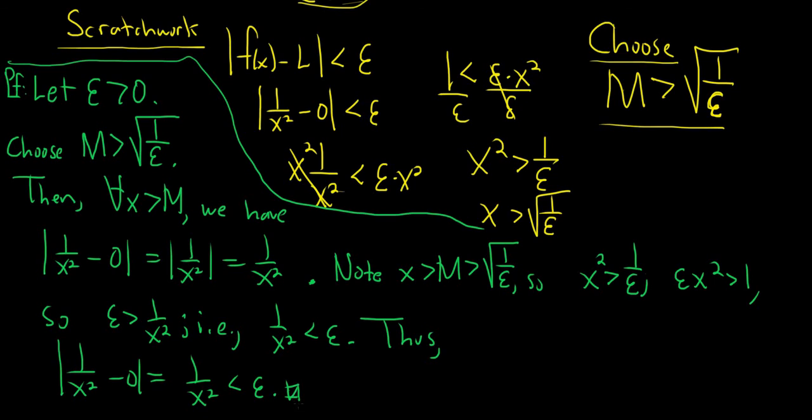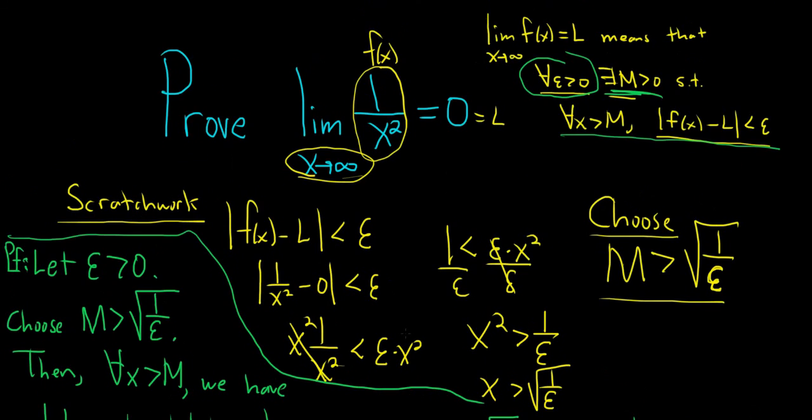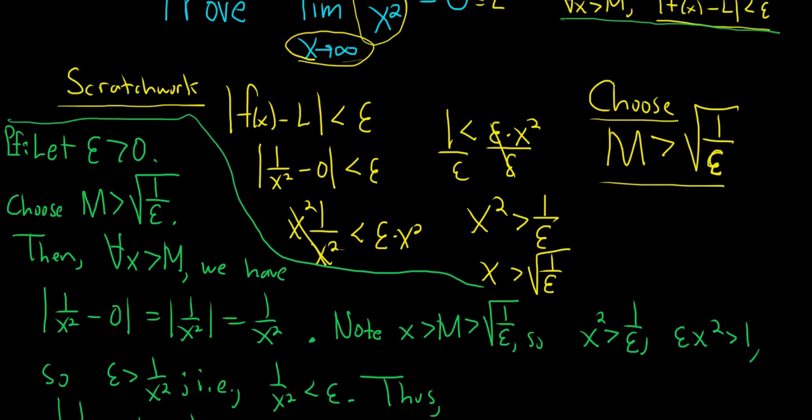We have satisfied the definition. Notice how I wrote it again here at the end and said thus. That's just for added clarity, right? Your proofs should be clear and elegant. That's the most important thing. Clarity is the most important thing. There's plenty of bad proofs. You want your proofs to be good. I hope this video has been helpful. Good luck.